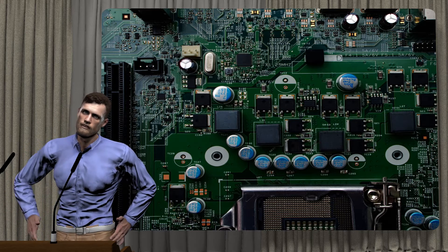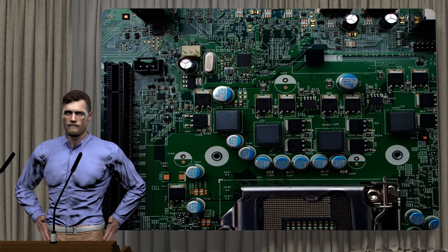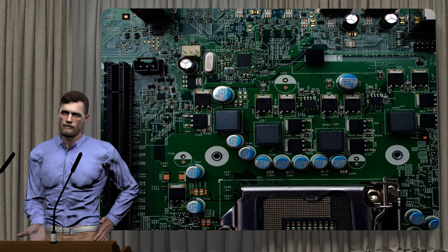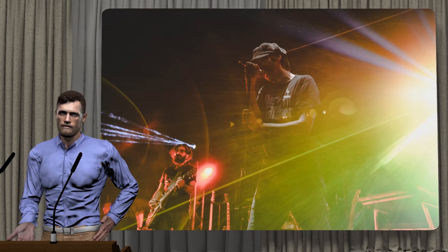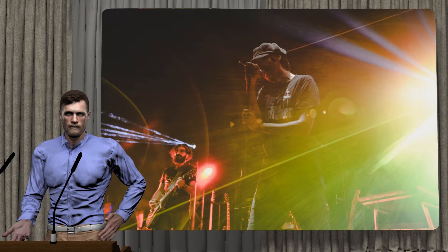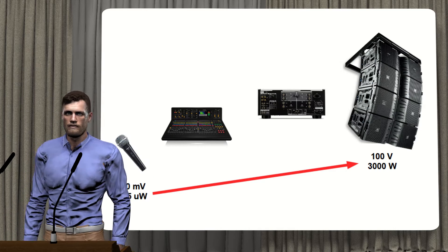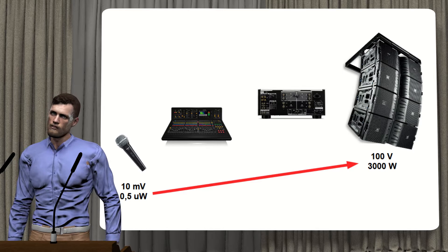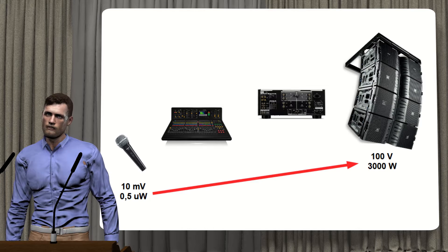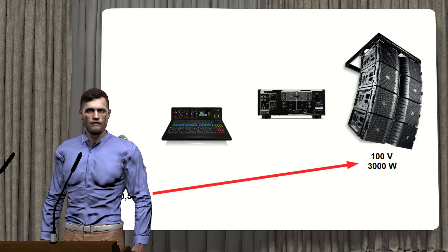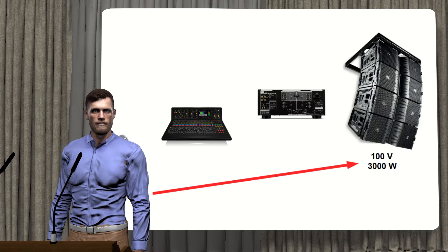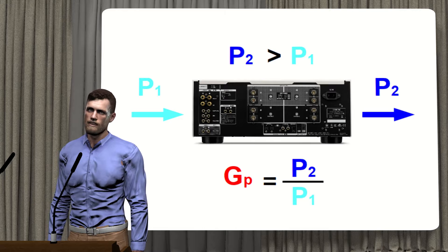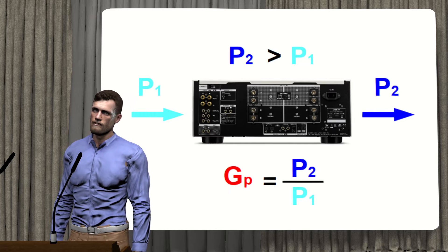Electronic circuits for measurement instrumentation, communications, data transmission, etc., must handle signals and adapt them according to the needs. For example, in a rock concert, the microphone used by the singer can generate a signal of 10 millivolts and a power of 0.5 microwatts, which will be amplified to voltages of 100 volts and powers of thousands of watts at the input of the speakers. In this way we can talk about power and voltage gains.